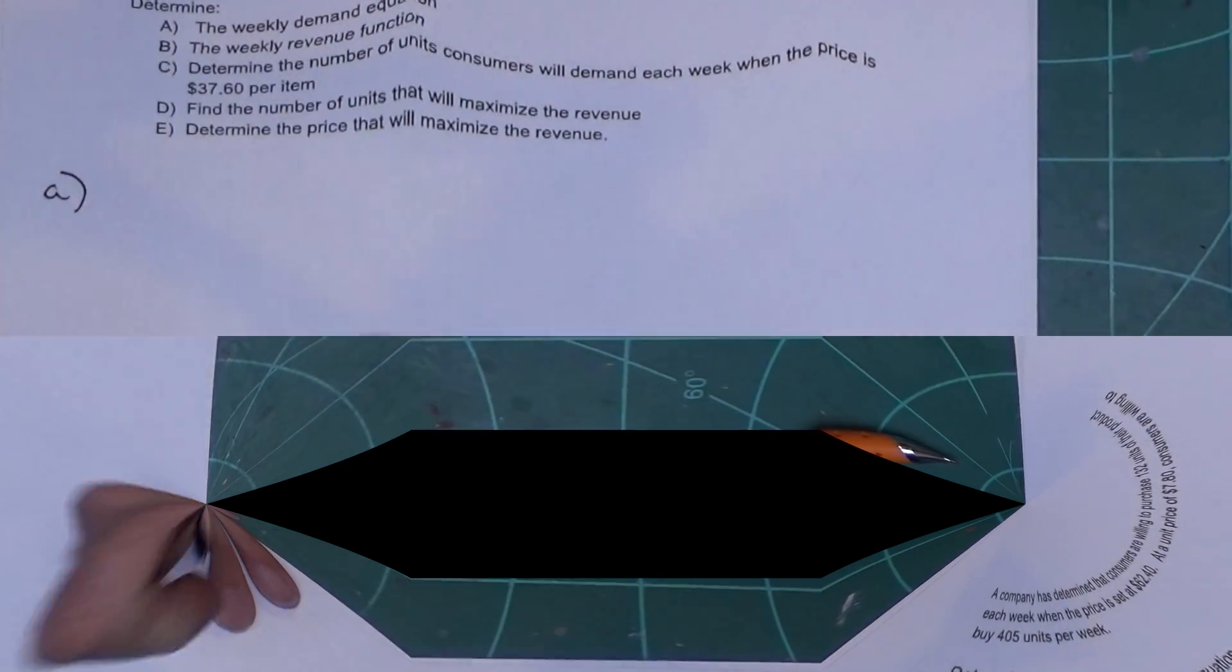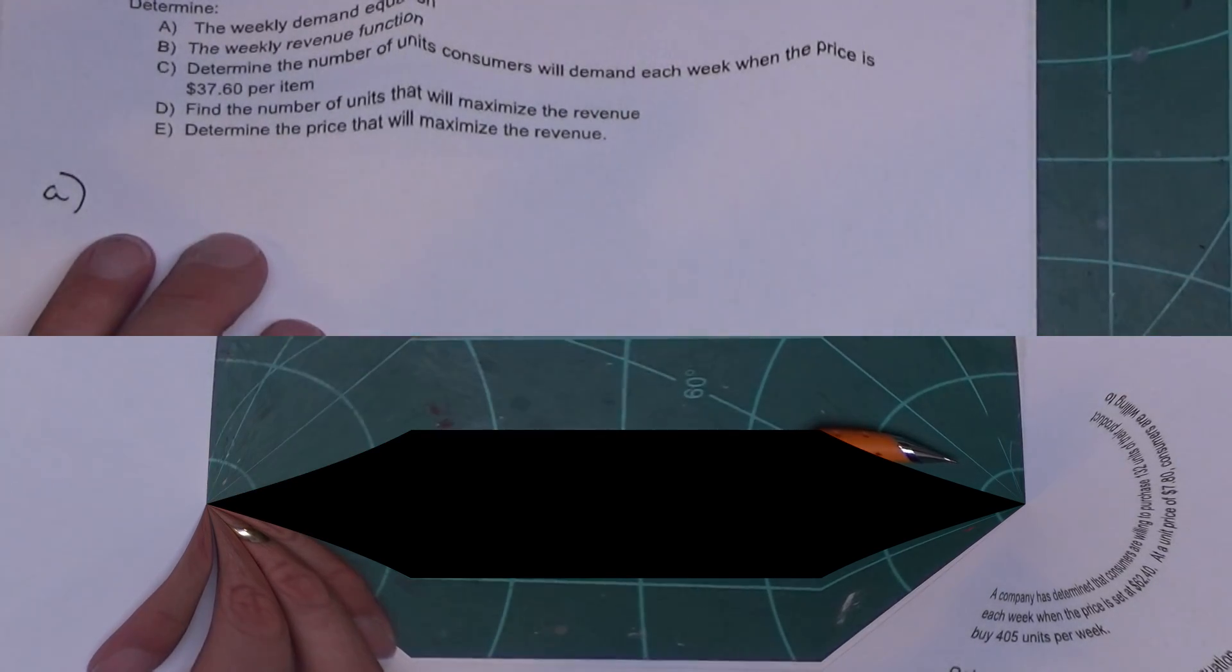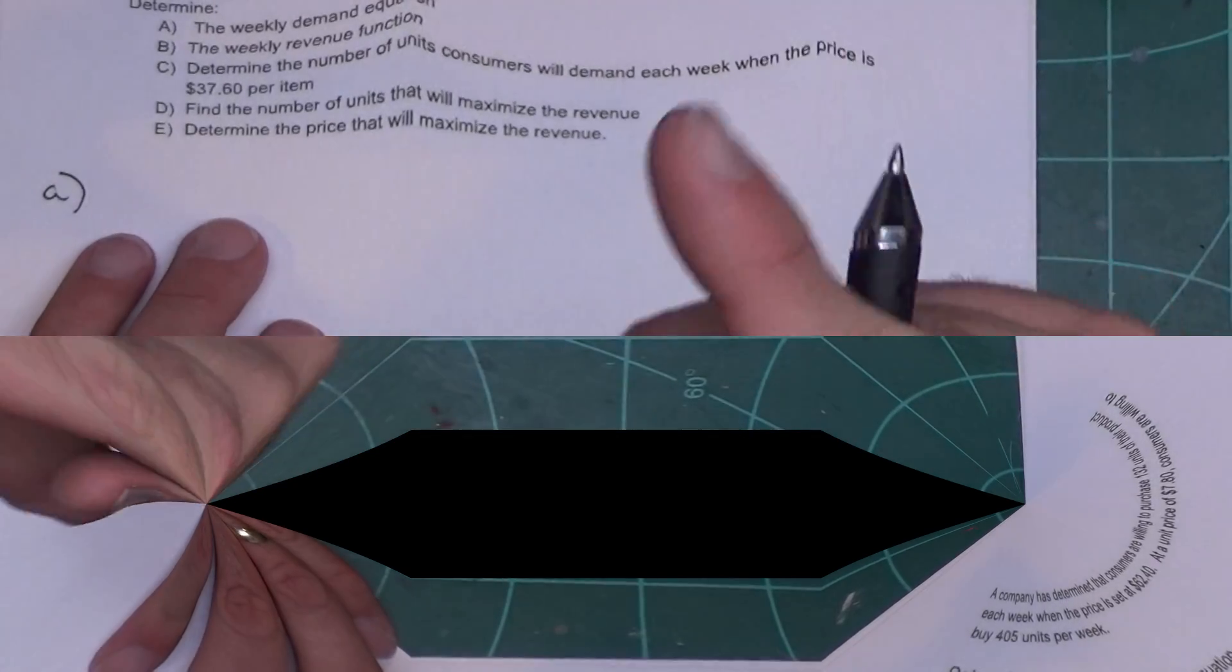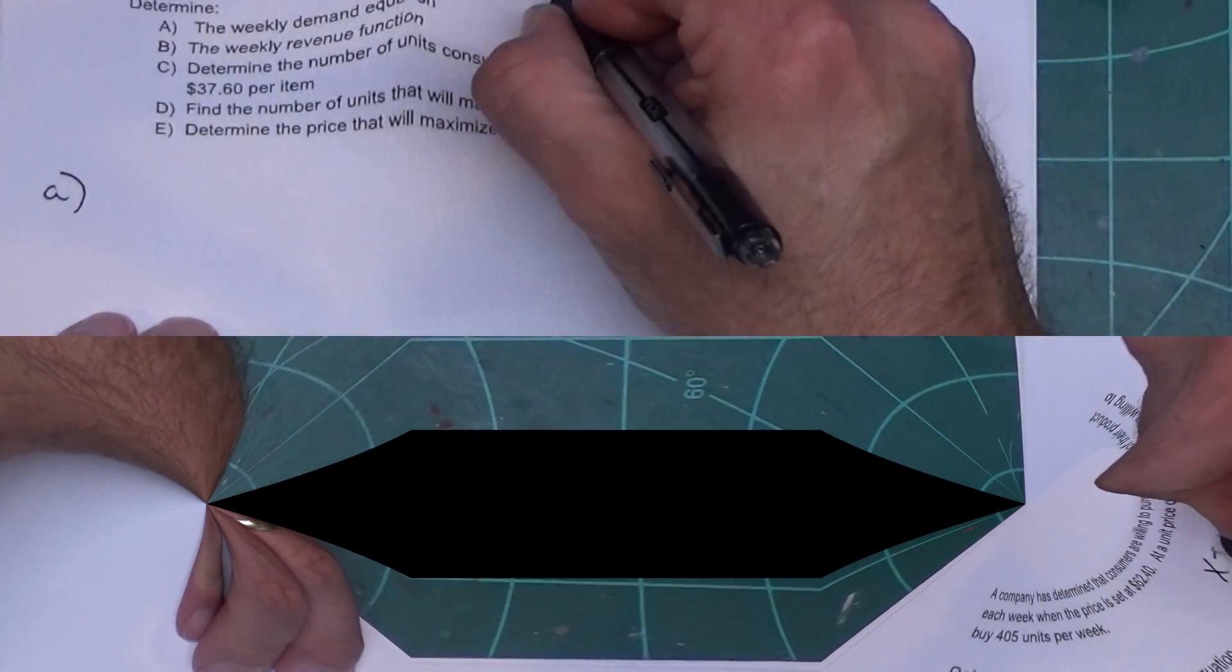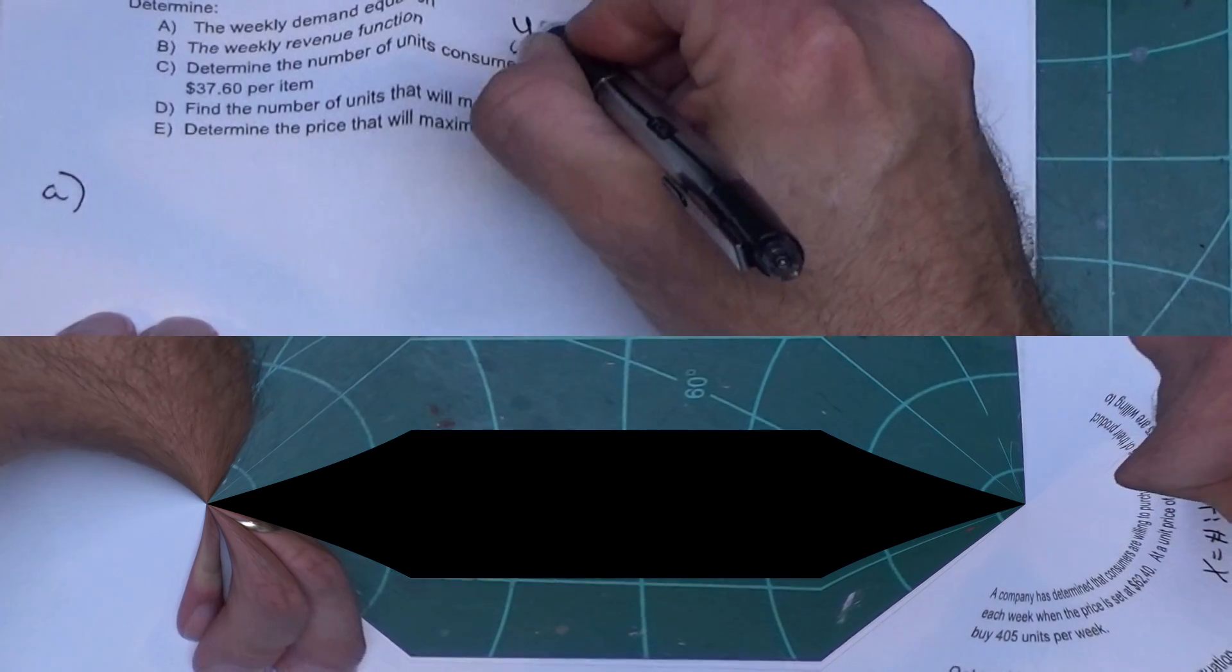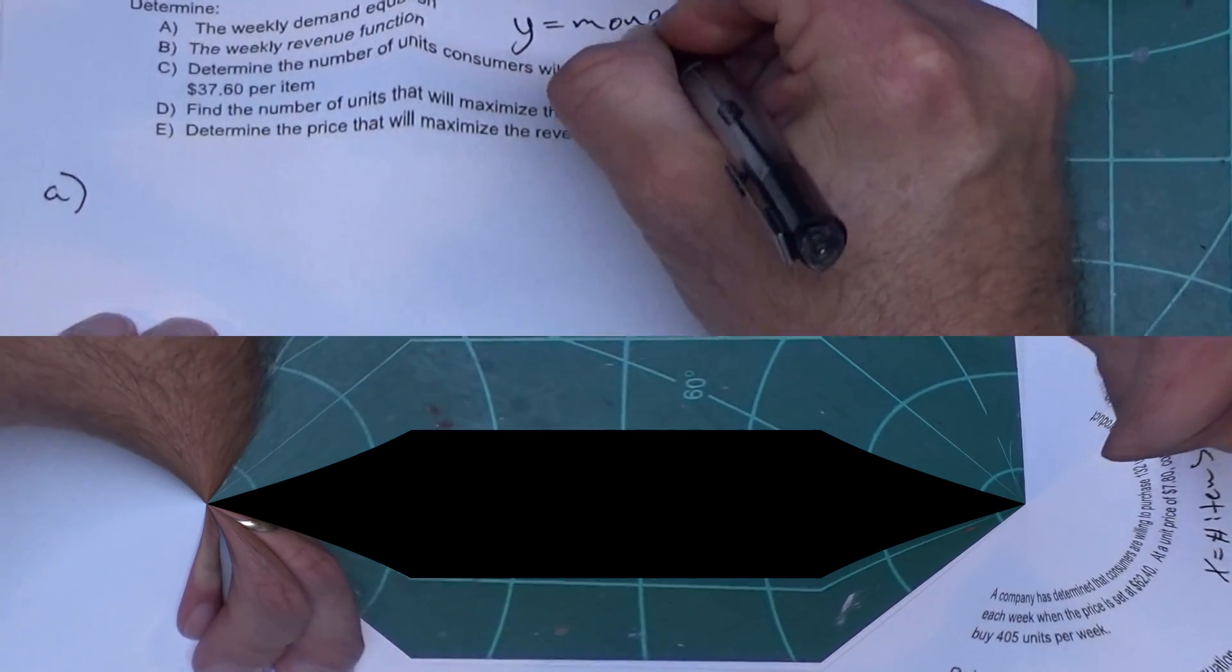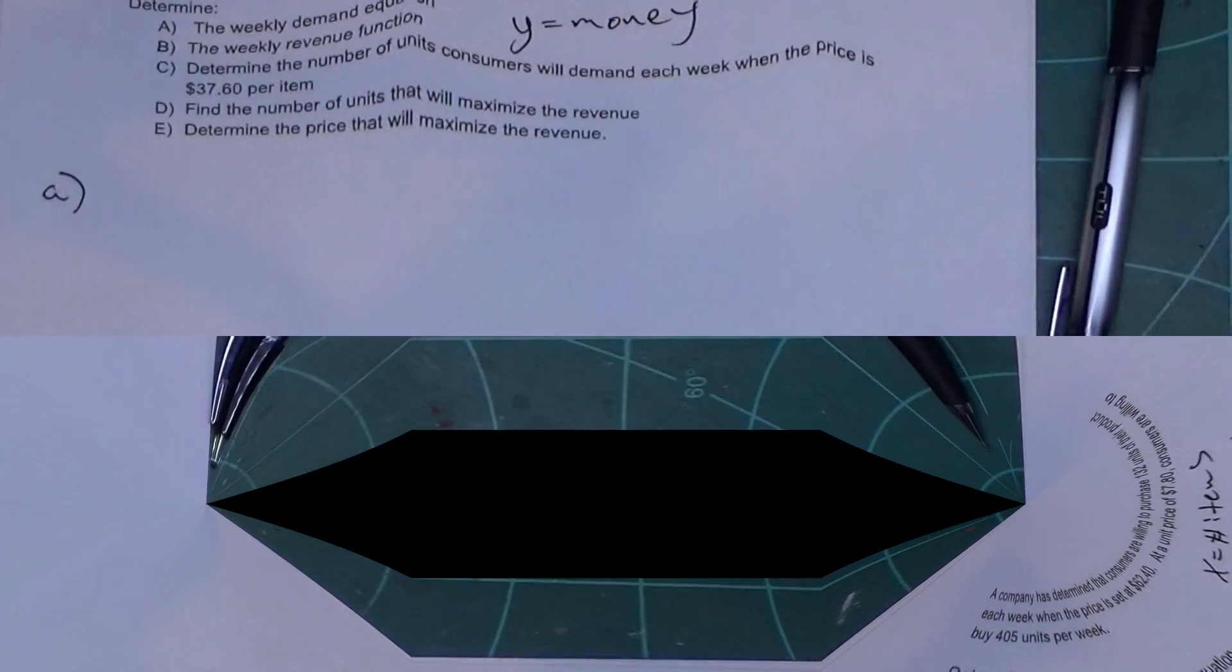I want the demand function. To find a demand function, assuming it's linear, and most of you are coming here you're going to do a linear demand, we're not econ majors who are using Excel and doing linear regression. But I need to get two points first. When you're getting points, remember X is number of items and Y equals money.